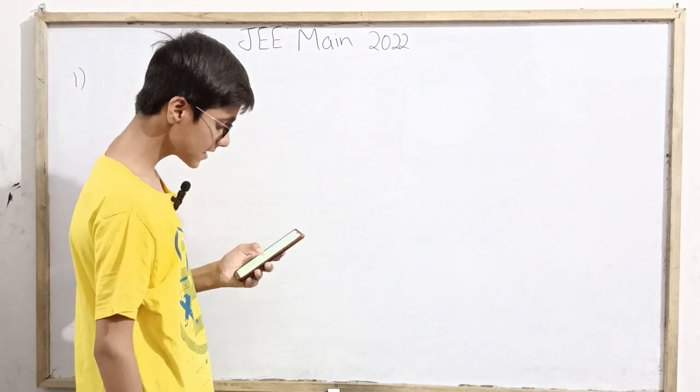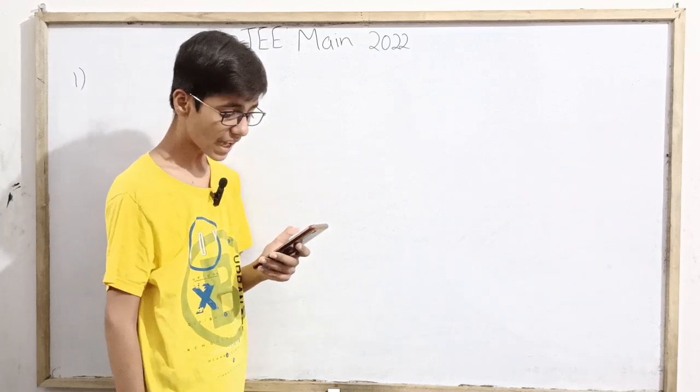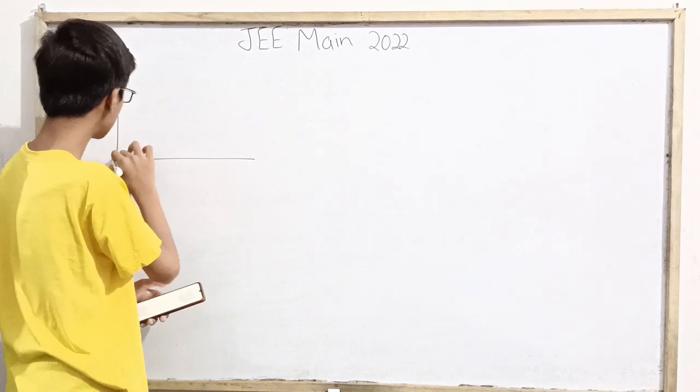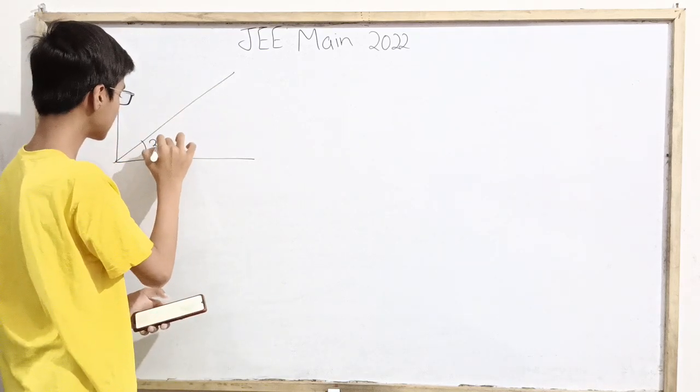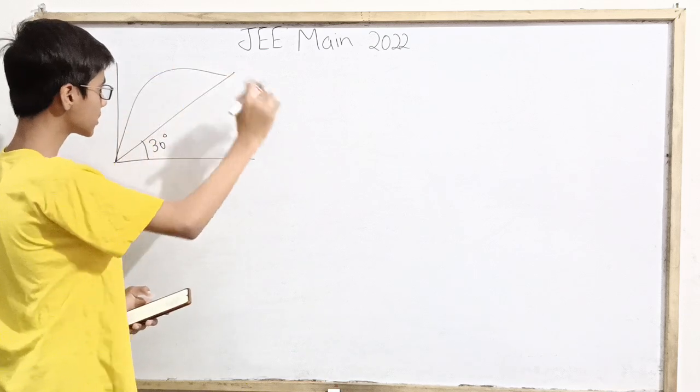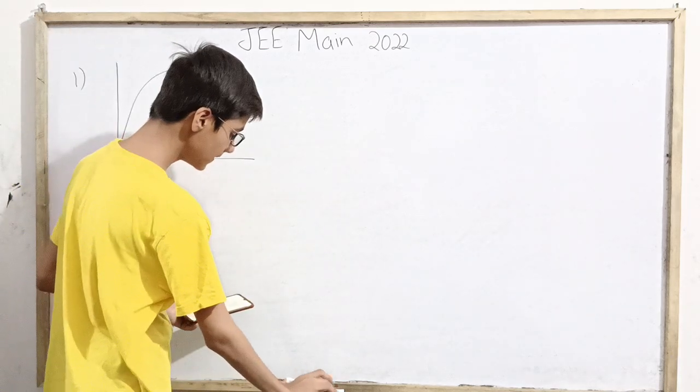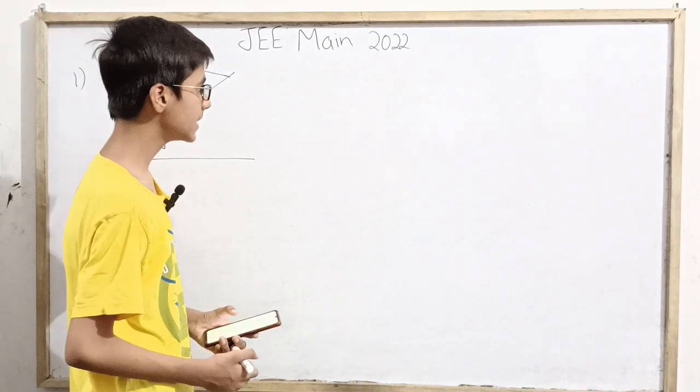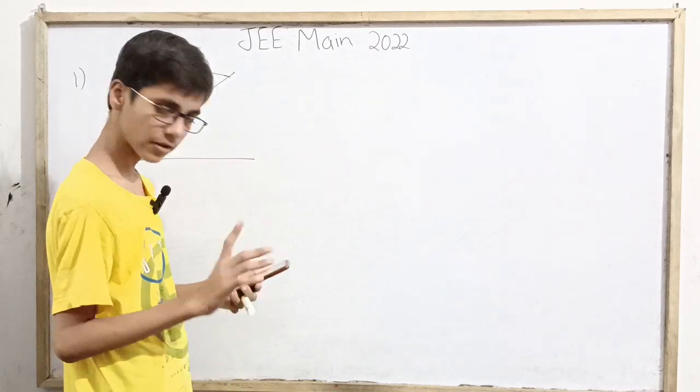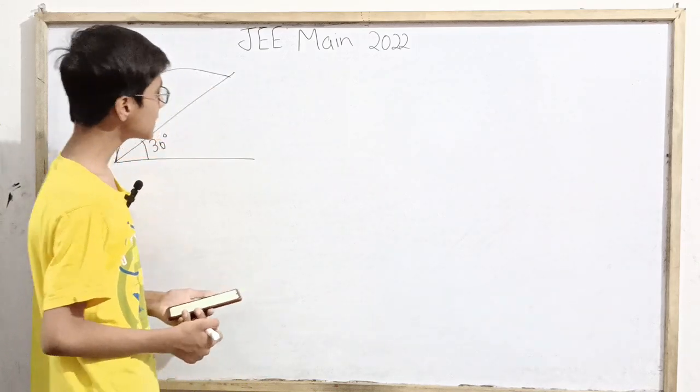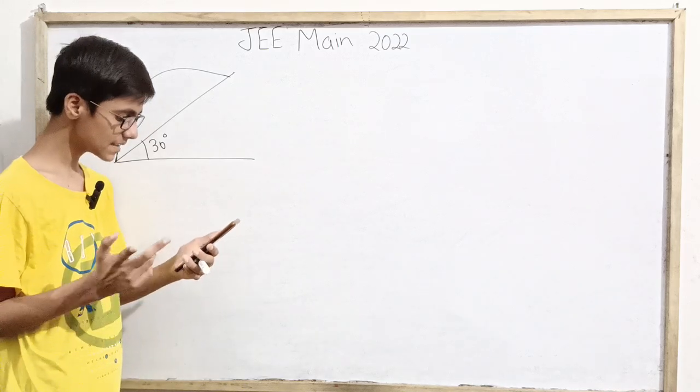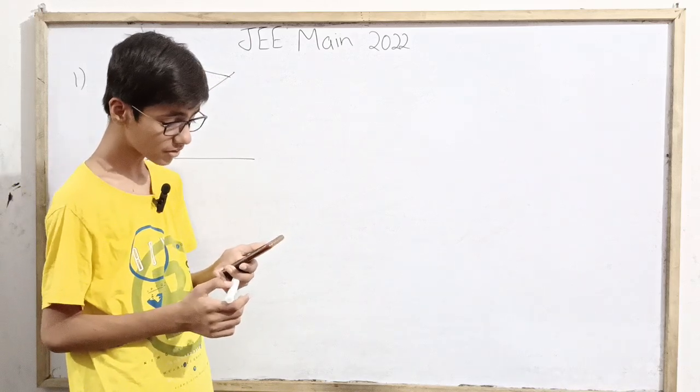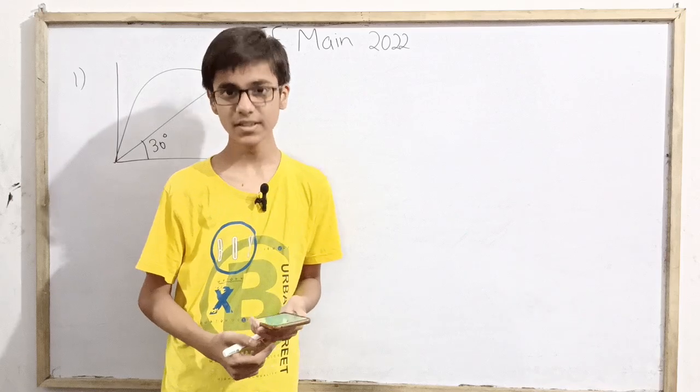The question is: a body is projected at 10 meters per second at an angle of projection of 30 degrees. Find the range. We have an inclined surface figure here at 30 degrees. The body is projected with this trajectory and we have to find the horizontal range. The velocity is 10 meters per second at 30 degrees. The options are: A is 10 over 3, B is 20 over 3, C is 10, and D is 40 over 3 meters.